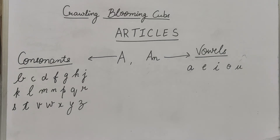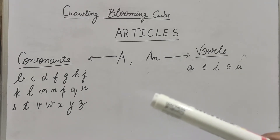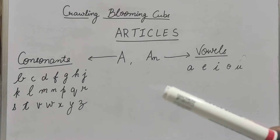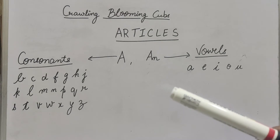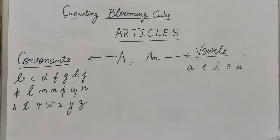Vowels — jho word A, E, I, O, U se start ho rahe hai. Aur consonants kya hote hai? B, C, D, F, G, H, J, K, L, M, N, P, Q, R, S, T, V, W, X, Y, Z — matlab woh remaining letters jo A, E, I, O, U ko chhoď ke hai.